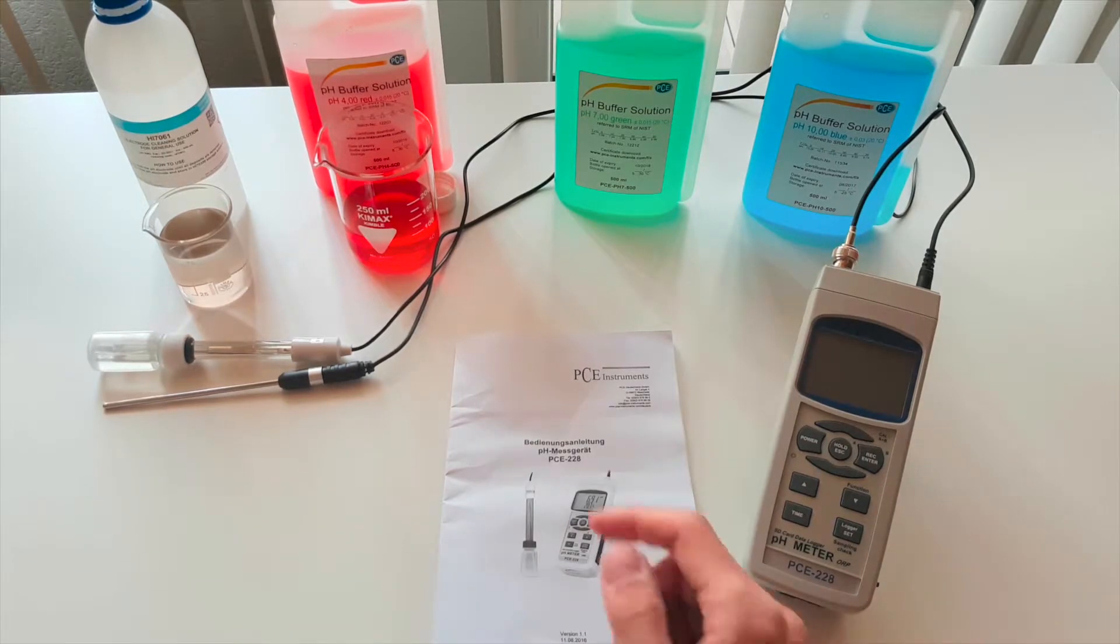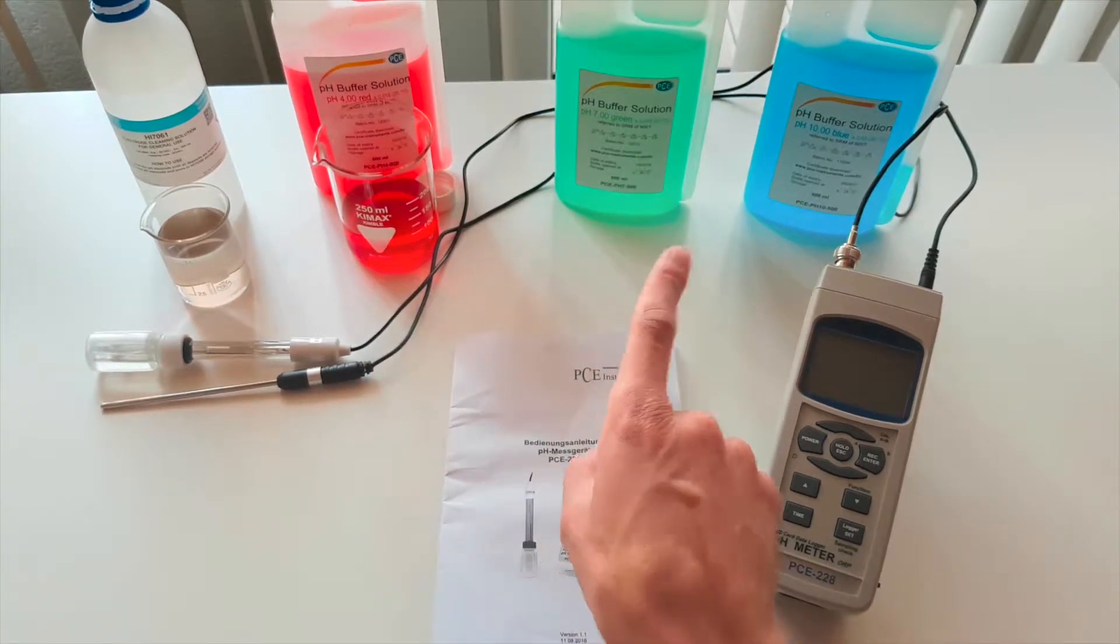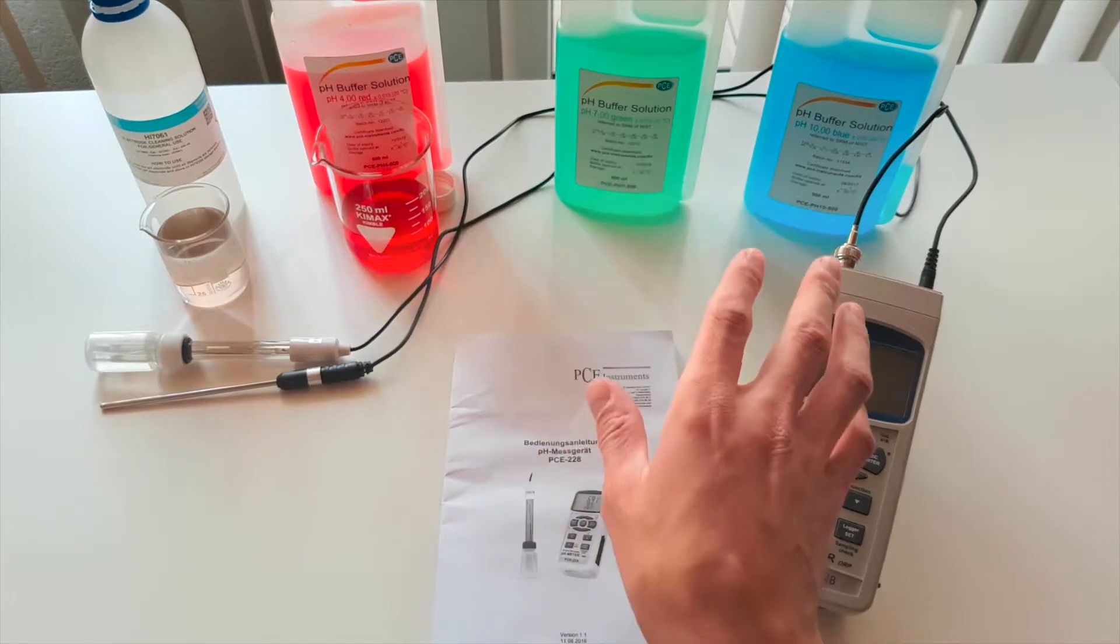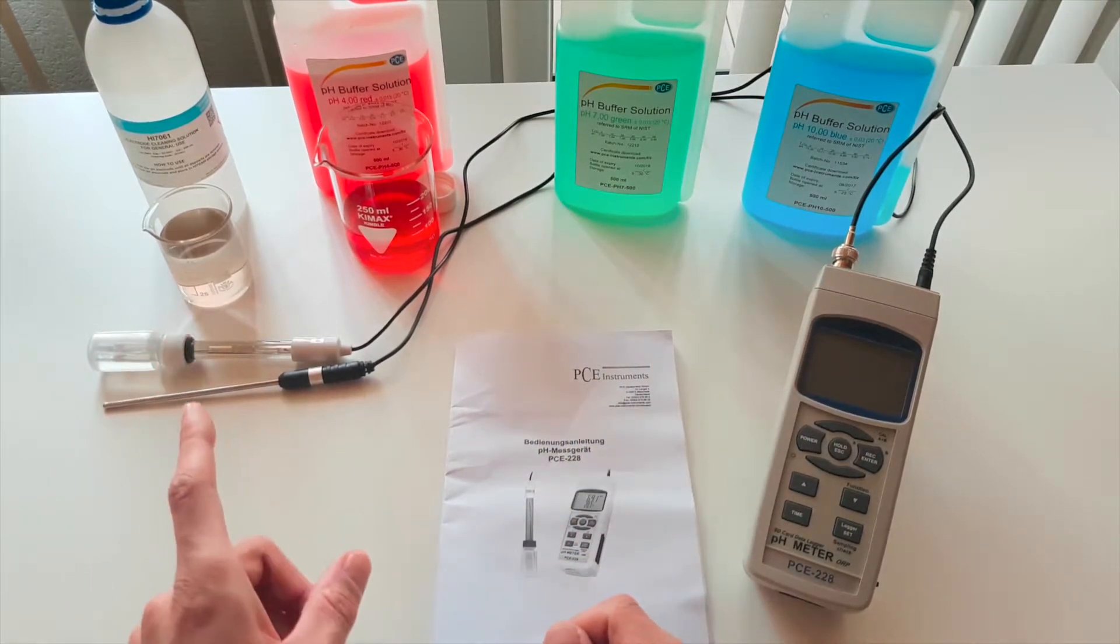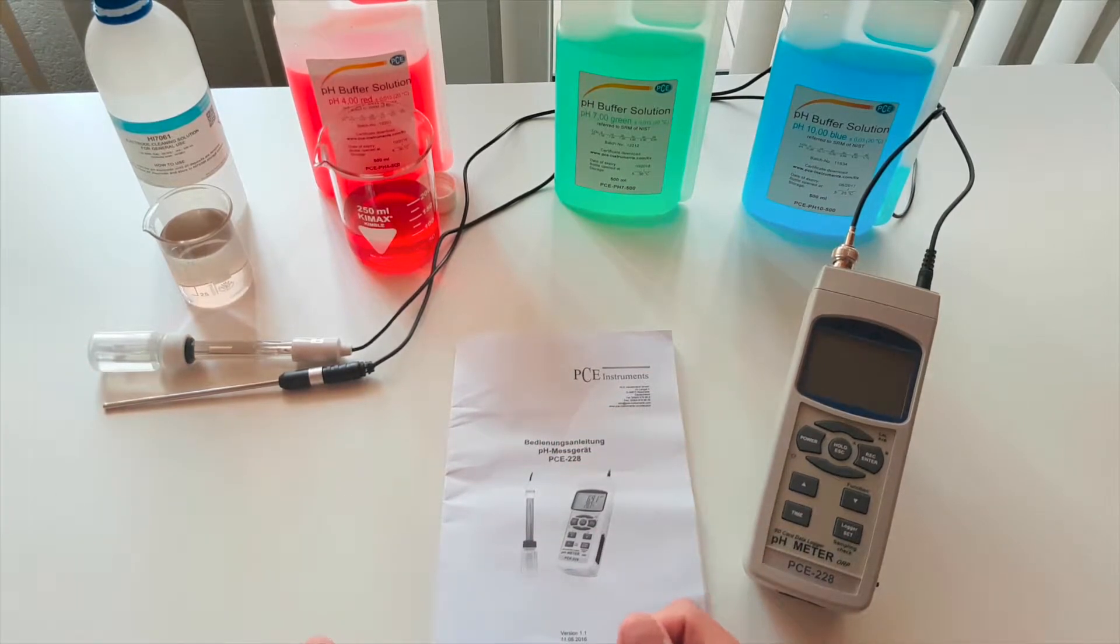That is very interesting and I've already here stood by different calibration liquids. pH value 4, pH 7, pH 10 to calibrate the instrument properly. And of course to clean the electrodes the cleaning fluid. And how that all works I will show you now.